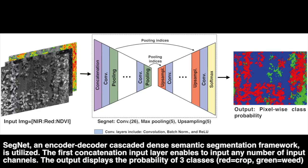In this project, we retain the original SegNet architecture, an encoder-decoder cascaded dense semantic segmentation framework. This network consists of 26 convolution layers followed by ReLU activation and 5 max pooling for the encoder, and 5 up-sampling for the decoder linked with pooling indices.